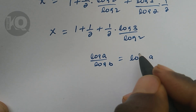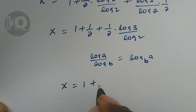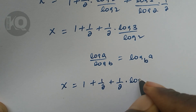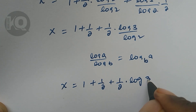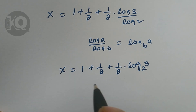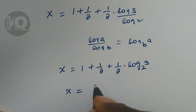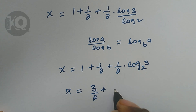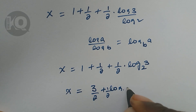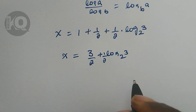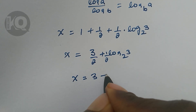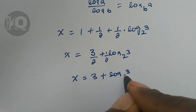From the change of base rule, log a over log b equals log of a to the base b. Applying this rule, X equals 1 plus 1 over 2 plus 1 over 2 times log of 3 to the base 2. Converting and combining, X equals 3 over 2 plus 1 over 2 times log 3 to the base 2.